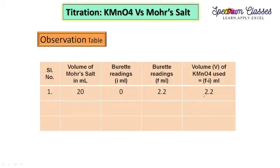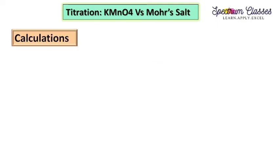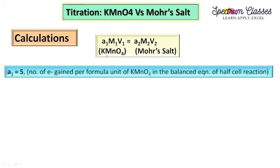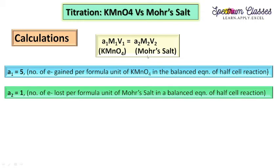Now the observation. For concordant reading, you repeat this experiment three times. Now the calculation part. We have a1M1V1 equals a2M2V2. This is the normality equation for redox titration. Suppose this is for KMnO4 and this is for Mohr's salt. Whatever you choose, either side you can choose, but please stick to that point: how many electrons are involved there. Accordingly we will put all the values for that particular species. So here if we are considering that a1 is for KMnO4, then a1 will be equal to 5, because number of electrons gained per formula unit of KMnO4 in the balanced equation of half cell reaction. a2 is equal to 1, number of electrons lost per formula unit of Mohr's salt in a balanced equation of half cell reaction. This is important.